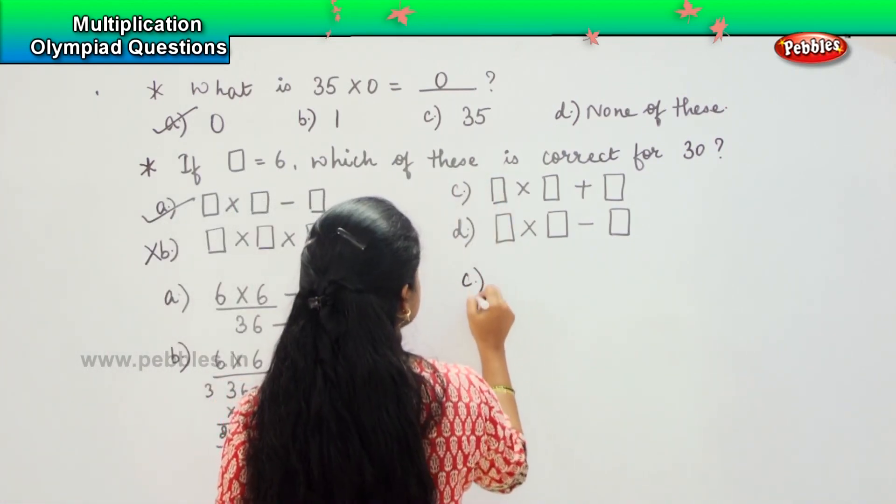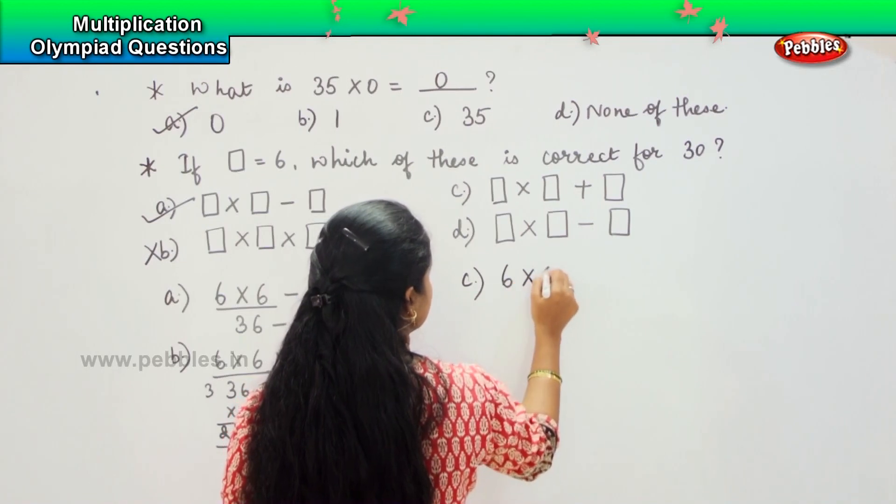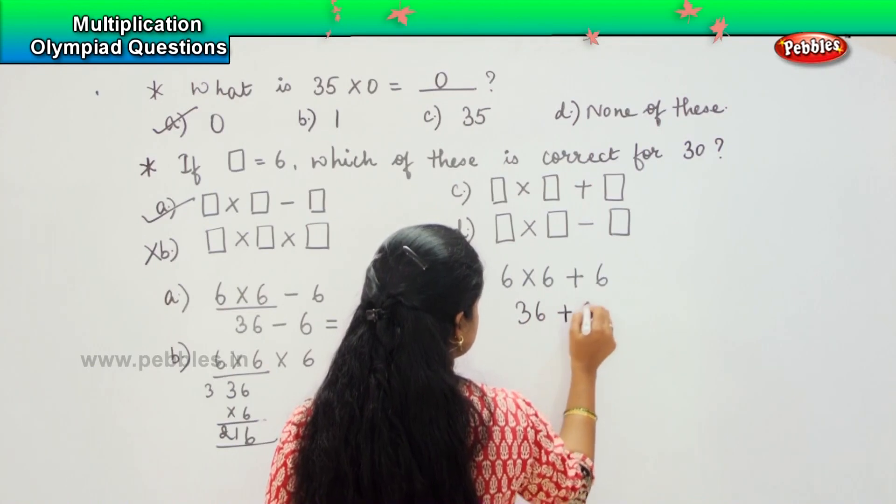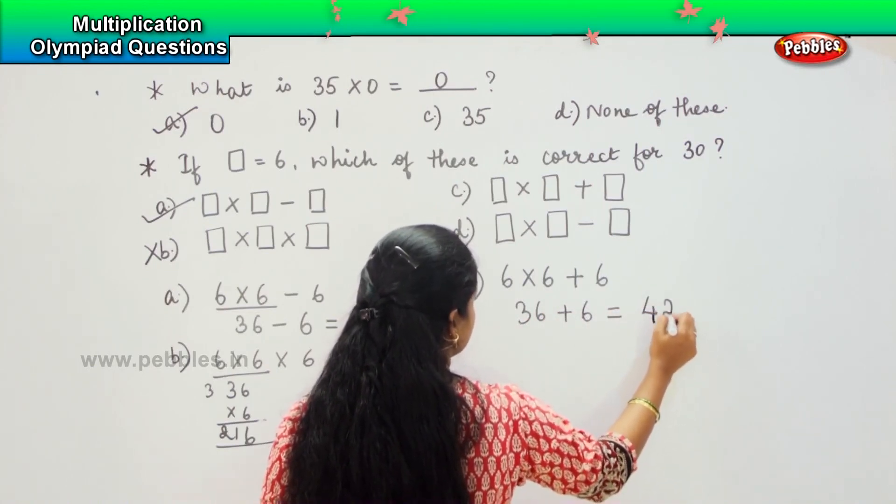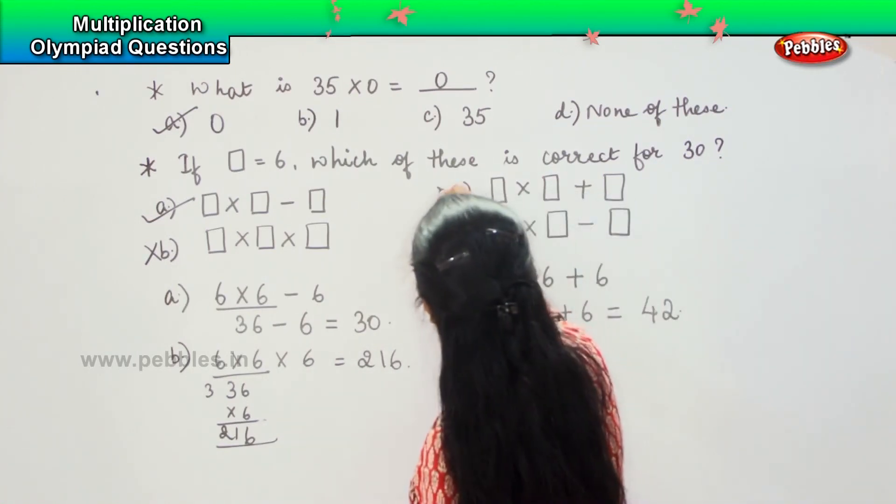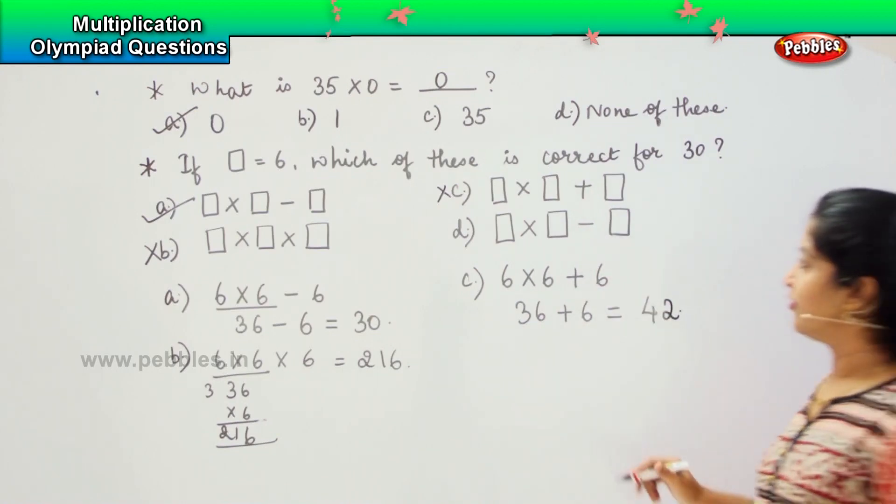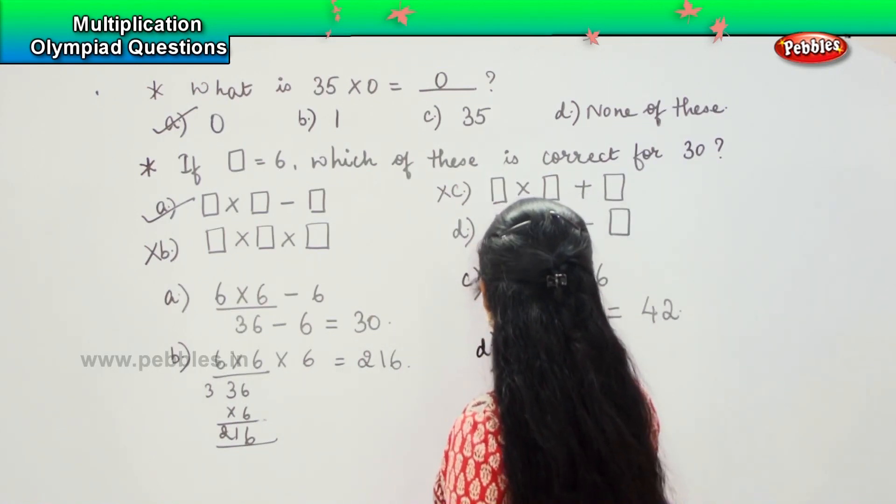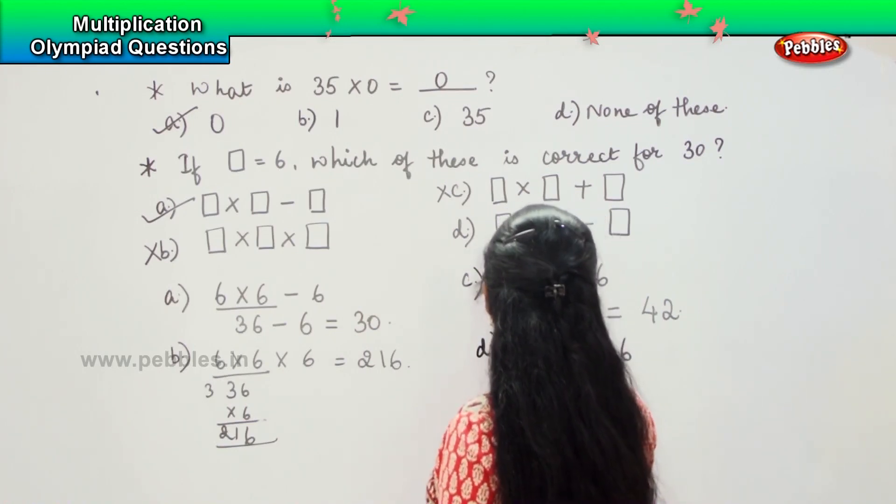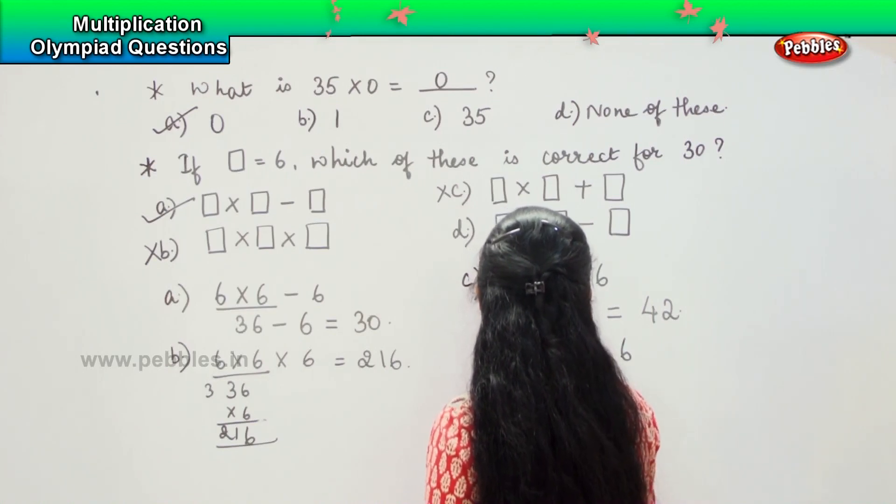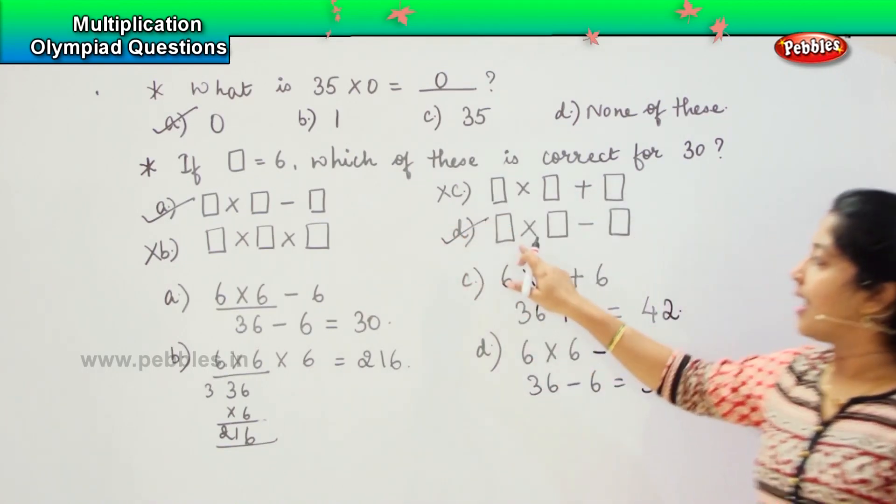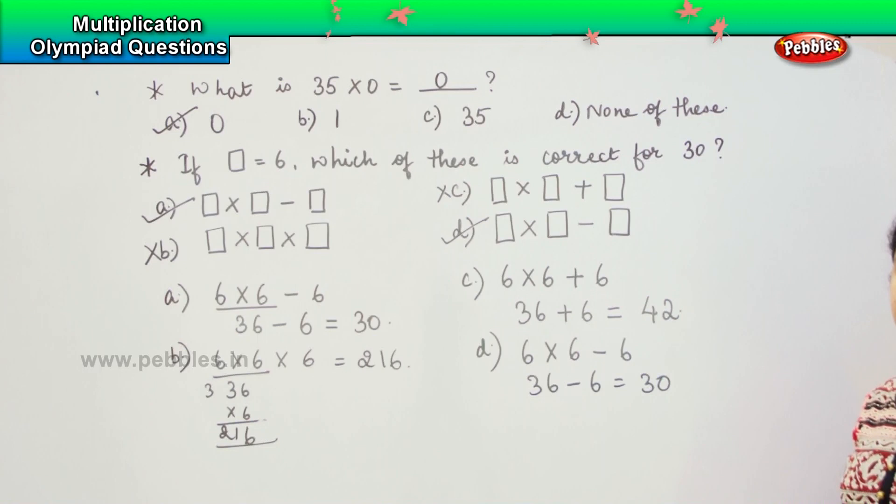Coming to the third one and the fourth one. The fourth one says 6 into 6 minus 6, which is 36 minus 6. So option A and D is my right answer.